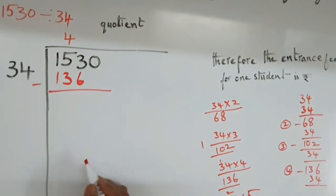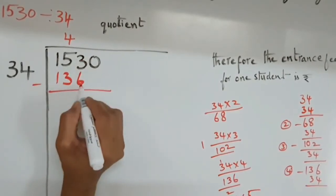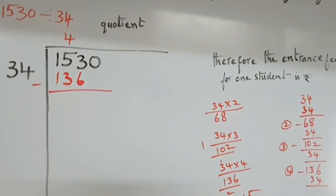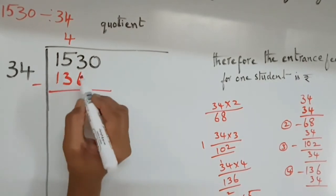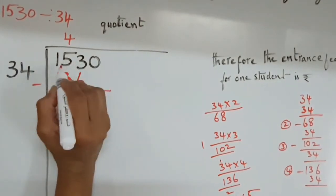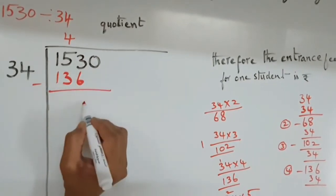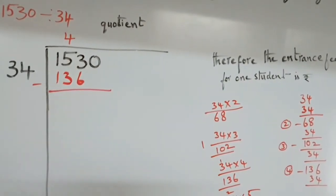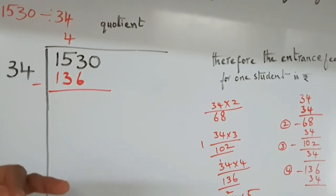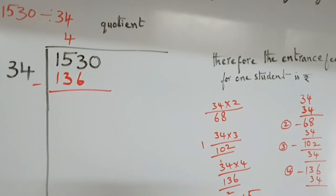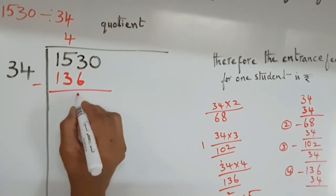Now, we have to subtract. 3 minus 6. Is it possible? No. Because it is lesser. What we have to do? We have to take length and it will become 13. From 13 minus 6. How much? After 6, you have to count. 7, 8, 9, 10, 11, 12, 13. It is 7.